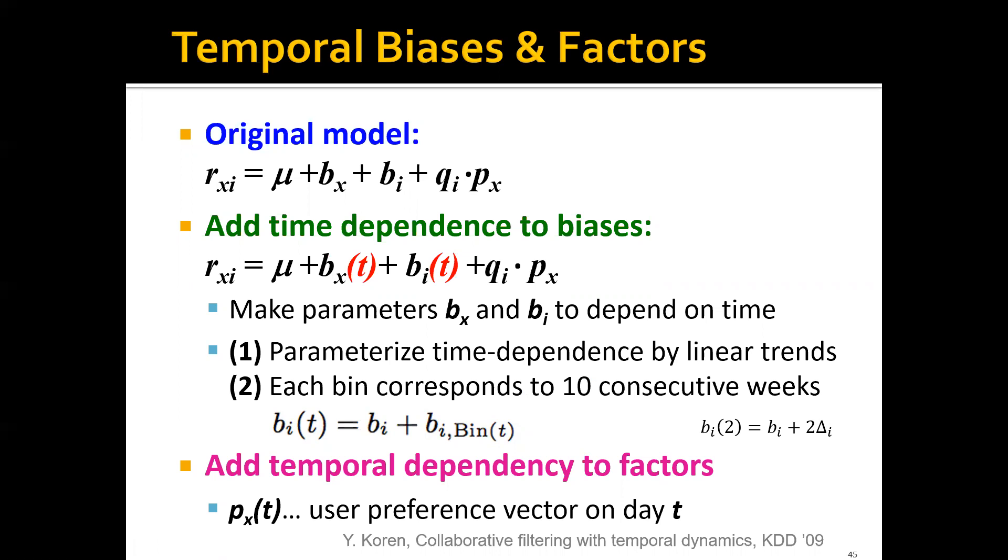If this rating happens in the second bin, which is like the rating happens between the 10th week and the 20th week, then the bias term for this particular movie i, which is bi(2), actually equals to bi plus 2 times delta i. This bi and delta i can all be learned by optimizing some objective function.